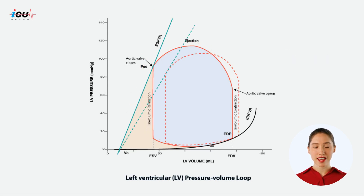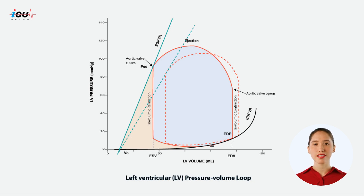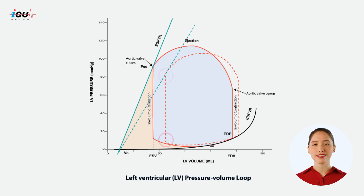On the other hand, when contractility is decreased, the heart's ability to generate force during contraction is impaired. This results in specific effects on the end systolic pressure and end systolic volume,